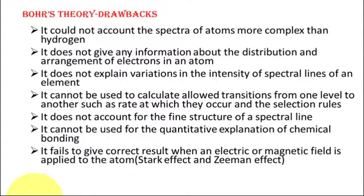Bohr's model also does not give any information about the distribution and arrangement of electrons in an atom — that is, the electrons distributed in different orbits. This was not clearly given by Bohr's atomic model.